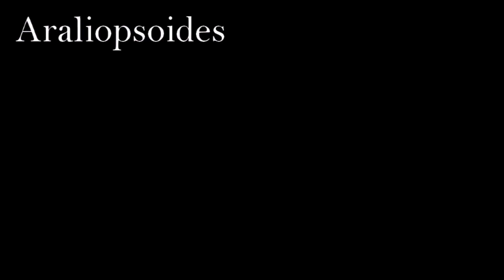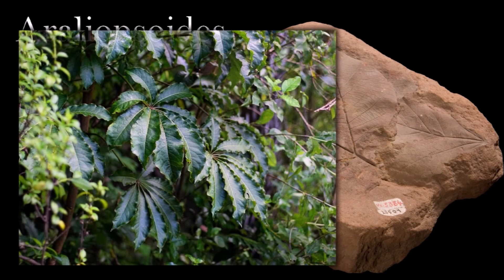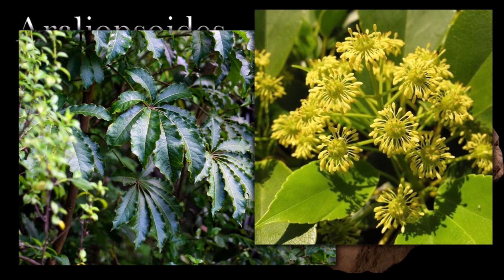The palmate leaves of Aureliopsoides had three distinct lobes. The wide bases of the leaf stalks suggest that the leaves were deciduous and shed seasonally. The plants themselves were small, shrubby, and probably grew in warm temperate to subtropical deciduous forests in middle and high northern latitudes during the late Cretaceous. Aureliopsoides was a forerunner of the maples that came later.